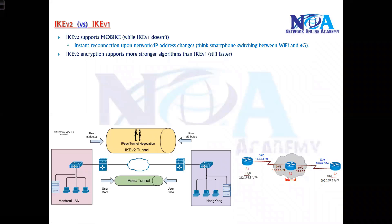IKE V2 supports stronger encryption algorithms compared to the previous version, yet is still faster. It supports powerful encryption ciphers with improved overall security and overcomes most of the security flaws present in IKE V1.